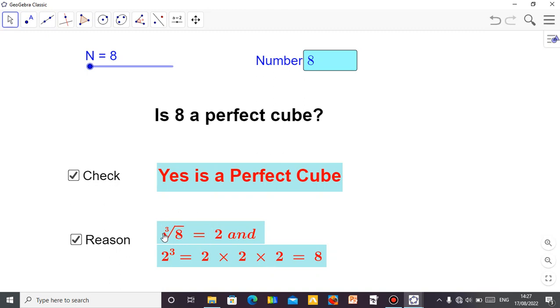You can also write it in this order. You can see the cube root symbol here with the three indicating it's a cube root of 8. Meaning the number you multiply by itself three times, 2 times 2 times 2, will give you the perfect cube.